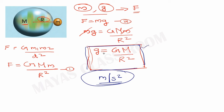Small g is equal to capital G times capital M divided by r squared. Acceleration due to gravity is independent of the mass of the object. The acceleration due to gravity is independent of the mass of the object.